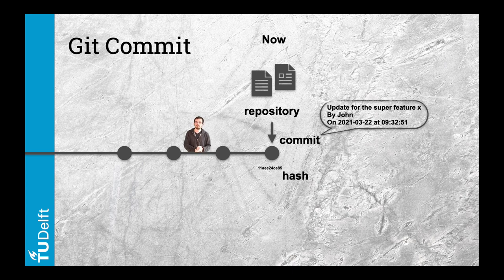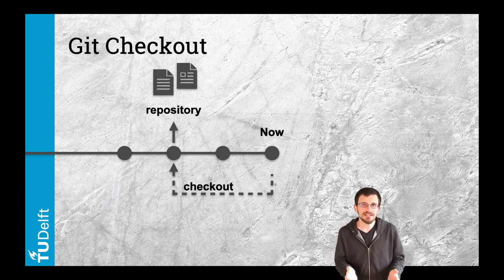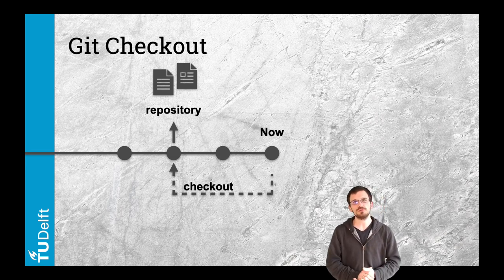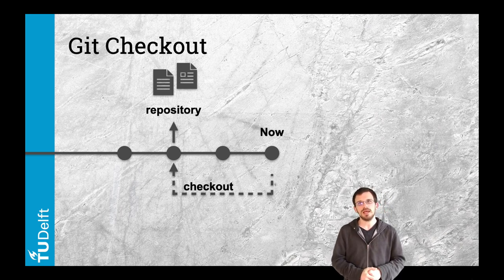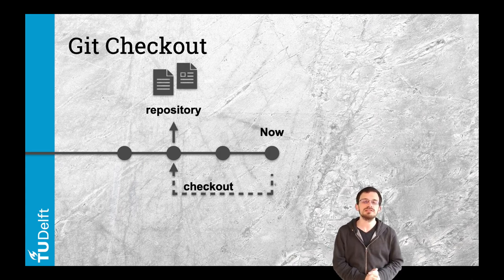Here we represent each commit as a circle on a timeline going from left to right. Checkout is the time machine — at any time it enables you to bring back to life a specific version of your code. You select the commit you want to go back to, and checkout will restore all the files in your repository as they were at that specific moment in time.